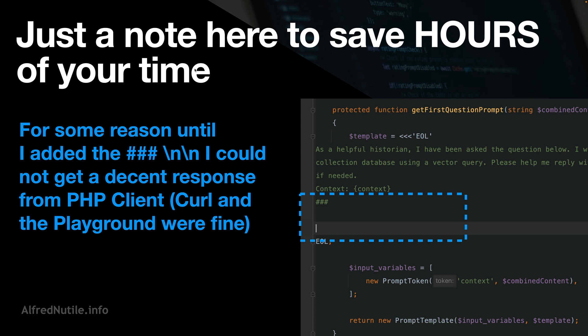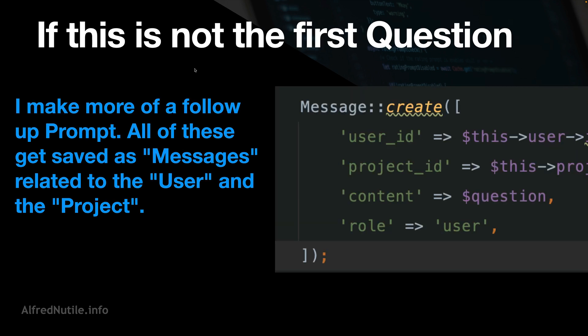I had a lot of trouble with PHP's library when sending the question. It worked in the playground — which I advise using as much as you can — the OpenAI playground gives you code in curl or Python to show you how to use what you just asked in the UI. That same code didn't work in PHP even though the curl worked in Postman. When I did some fine-tuning, one suggestion was to add a newline to the end of my question, and then it started working — got really lucky after a lot of head-scratching.